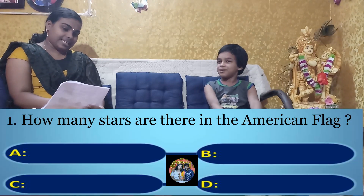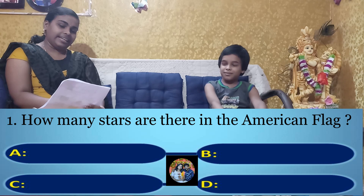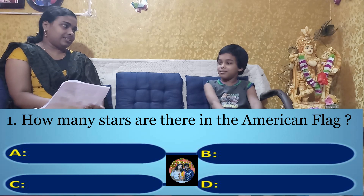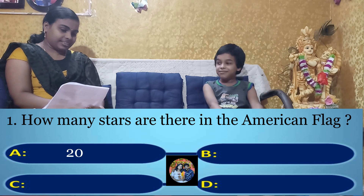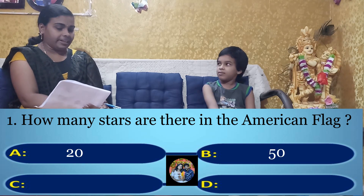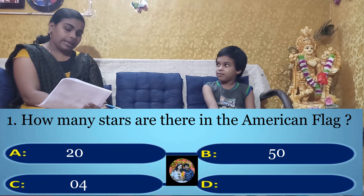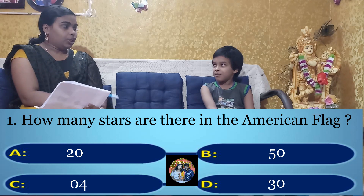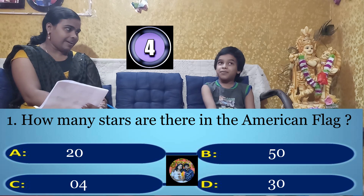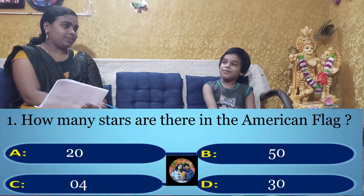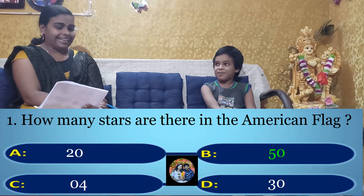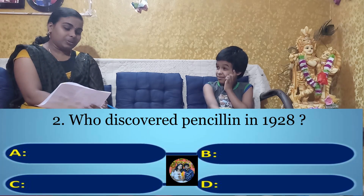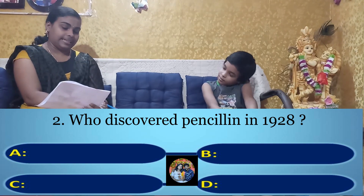Can we start? Yes. First question: How many stars are there in the American flag? Option A: 20, Option B: 50, Option C: 4, Option D: 30. Your time starts now. The answer is 50. The right answer is Option B: 50.